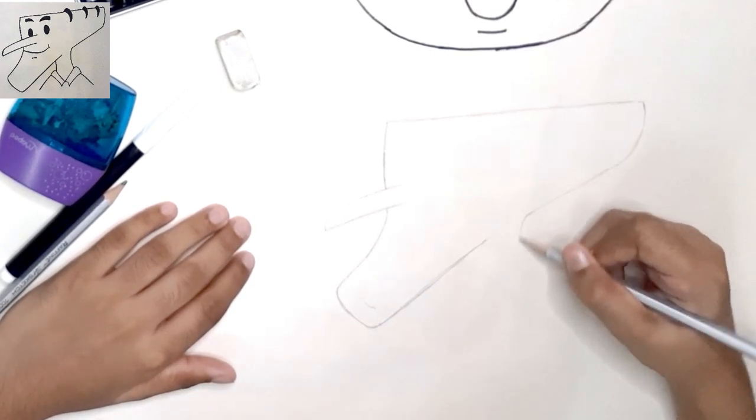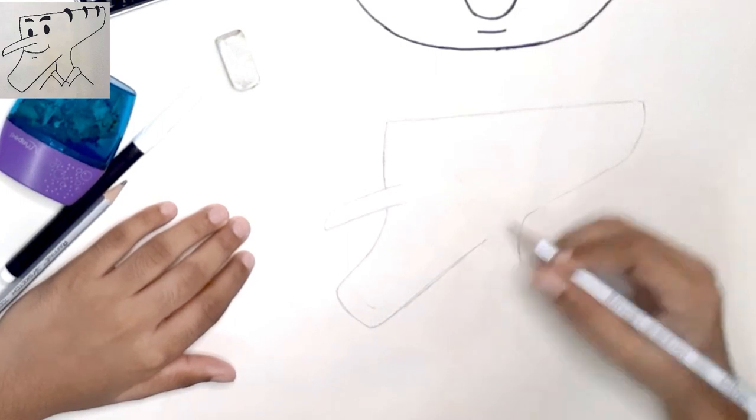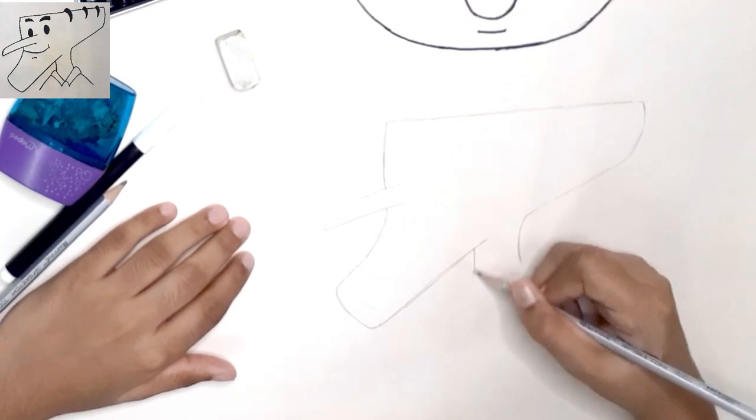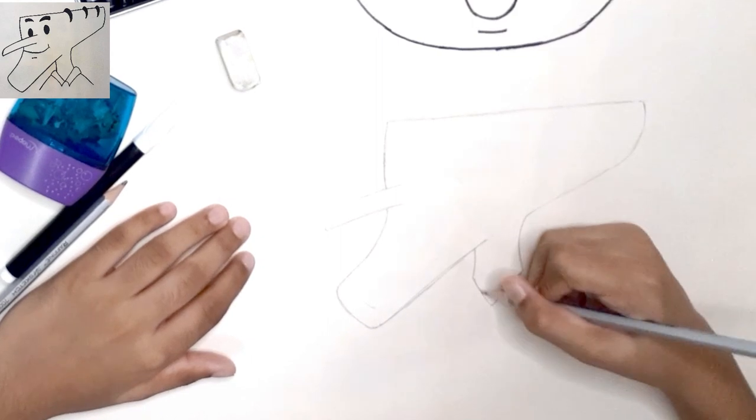Then over here make a curve to make way for the neck, and same like that over here also. Draw a triangle-like shape for the part near his collar.